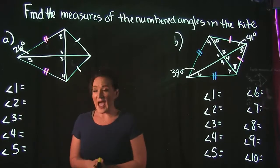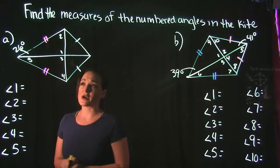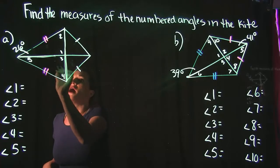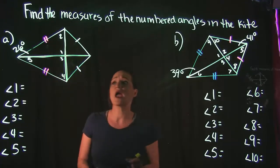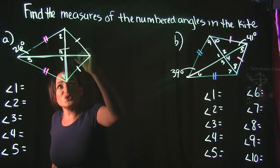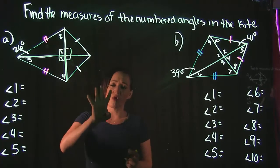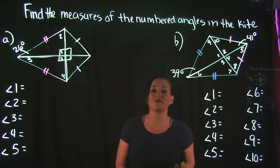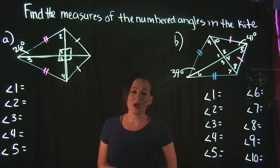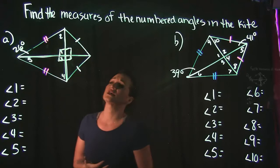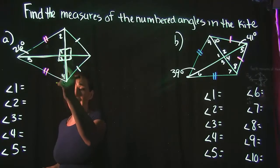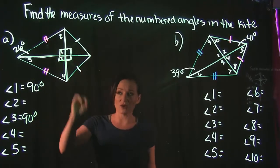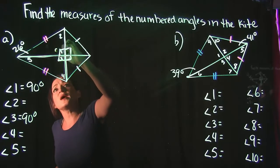The right triangle is actually where we start. The two lines inside the kite connect to form four triangles, and their intersection creates four perfect right angles — one, two, three, and four. Since each is a right angle equal to 90°, angles 1 and 3 are both 90°.